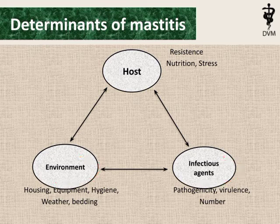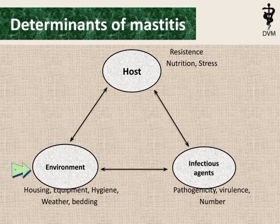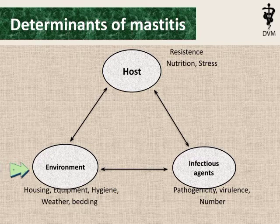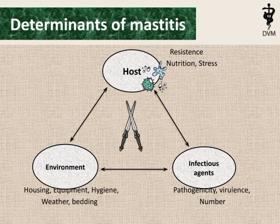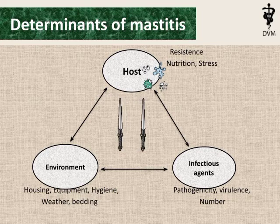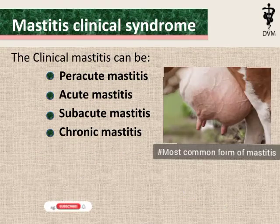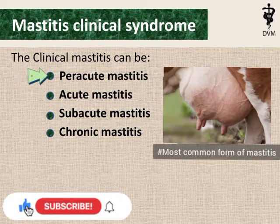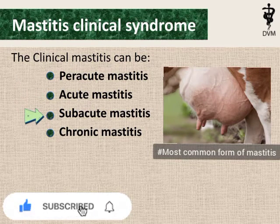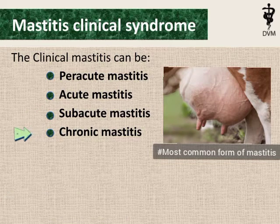Determinants of mastitis include environment and infectious agents. Environmental factors include housing, equipment, hygiene, weather, bedding, etc. Pathogenicity, virulence, and number of infectious agents also impact the host, which resists their attack.